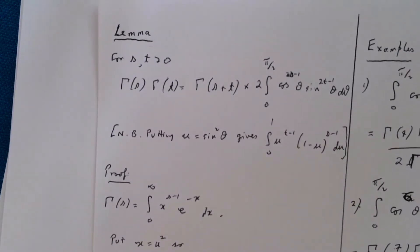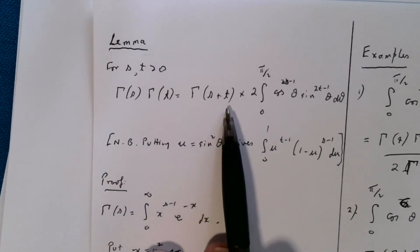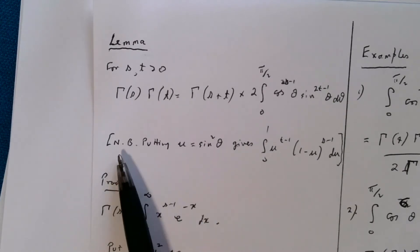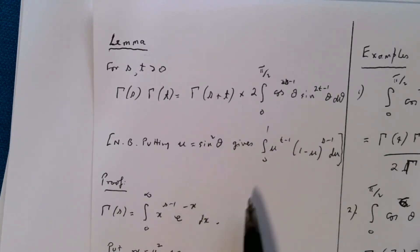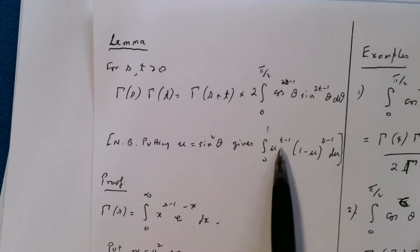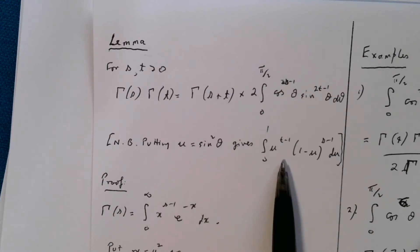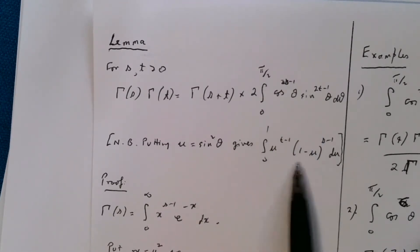Here's the statement of the lemma: that gamma of s times gamma of t is gamma of the sum times twice this integral. Before we look at the proof, if we put u equal to sine squared in this integral and make a change of variable, it turns into the integral from 0 to 1 of u to the t minus 1 times 1 minus u to the s minus 1 du — this is what you normally see when you look up a beta integral, and is in fact the usual way of writing it in many calculus books.